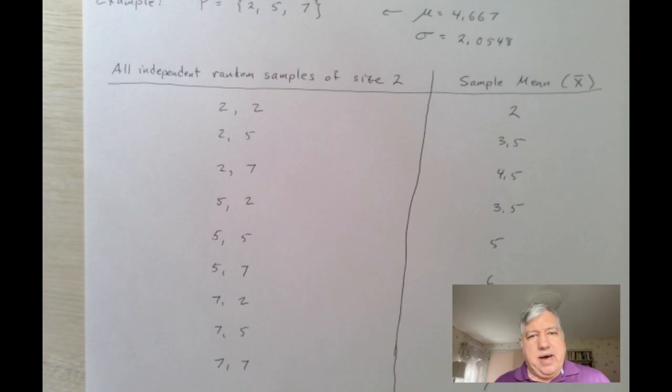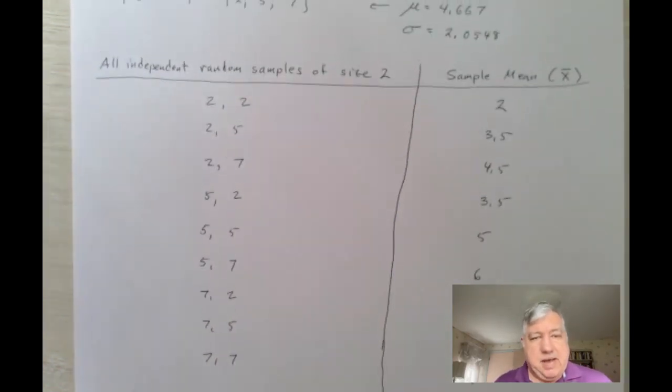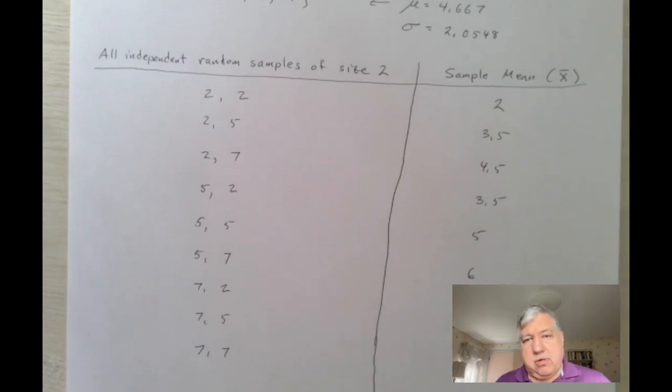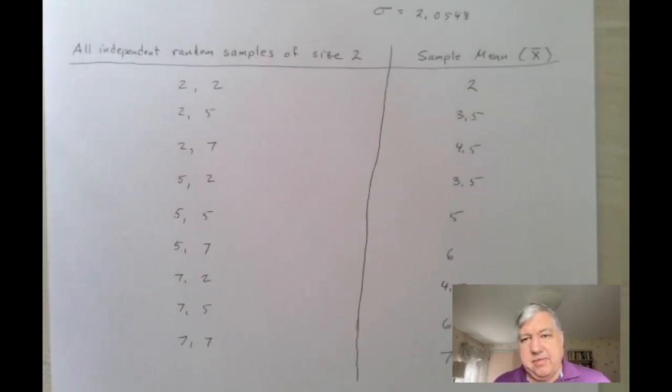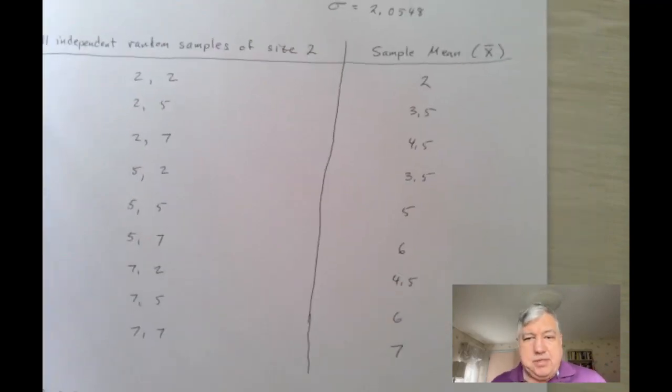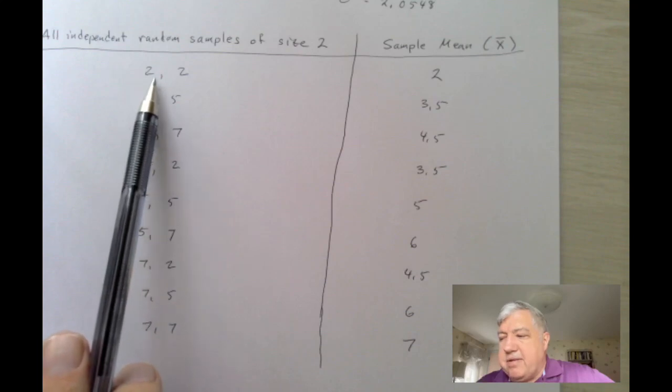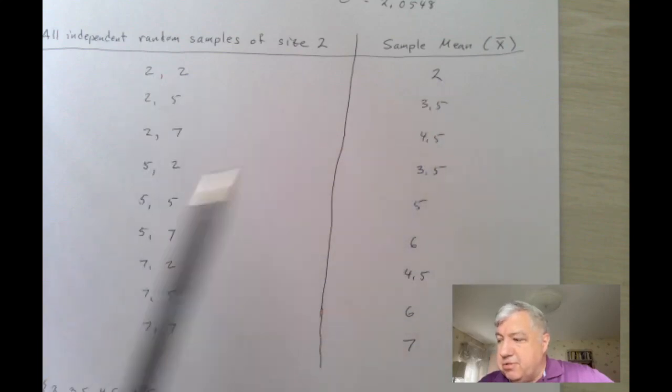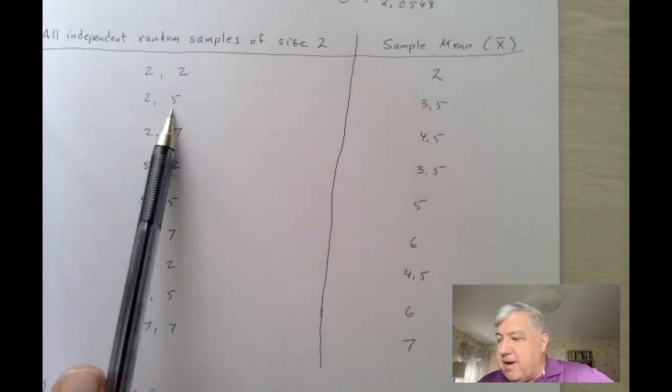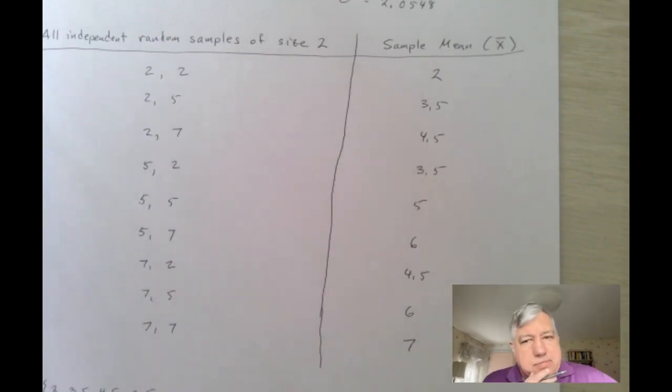So with that in mind we see that there are nine possible samples where order matters, and then we can compute the sample means this way. We see that for example obviously the mean of this two and two is two, the mean of two and five would be seven divided by two which is 3.5 and so on.